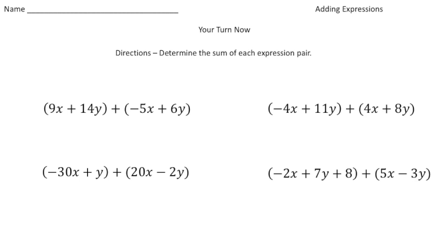Welcome back. Let's see how you did with these practice problems. For this first one, we have 9x and negative 5x. So 9x and negative 5x gives us 4x. And then 14y and 6y, when we add those together, we get 20y. So the first one should have been 4x plus 20y.